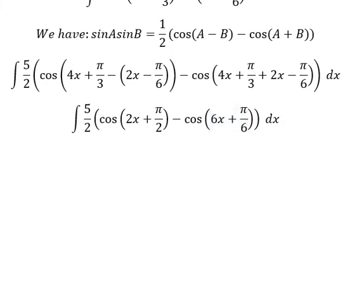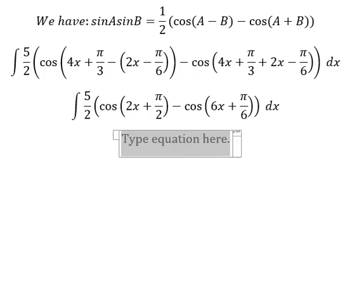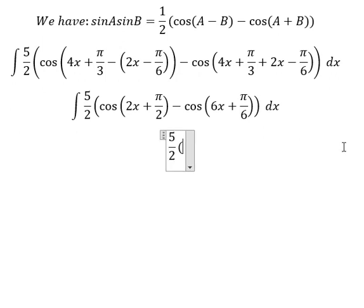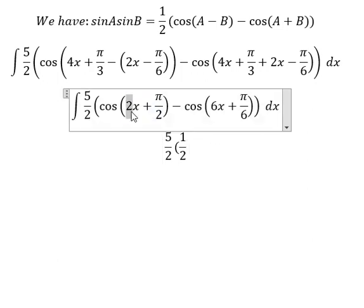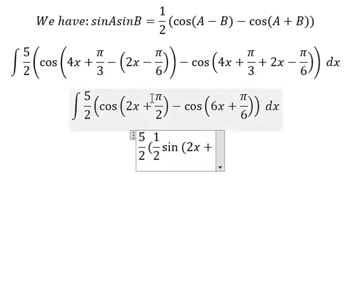And now we can get the final answer. The integration of cosine 2x plus π over 2, we have one over two. Number two, that's it from coefficient of x. And we have sine of 2x plus π over 2.